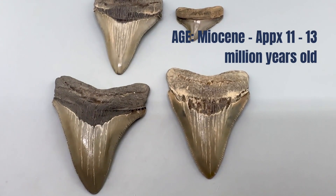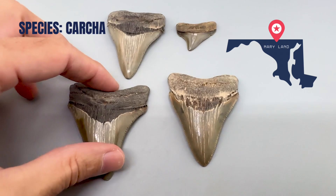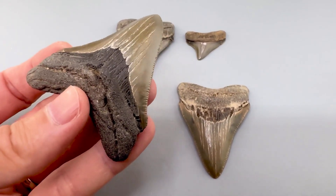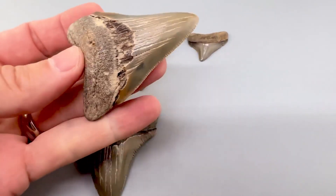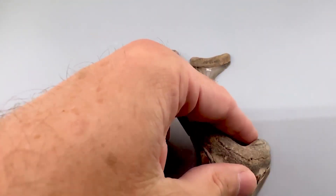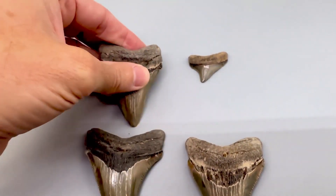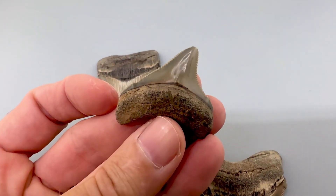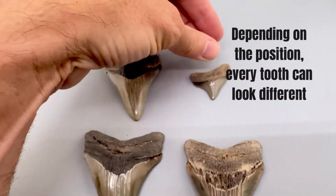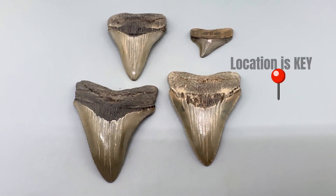This group of Chubutensis is all from the Middle Miocene Calvert Formation in Maryland, roughly 10 to 14 million years old. You can see that some have little hints of cusps, and some have hardly any cusp at all — but this is what it is, it's a Chubutensis tooth. You could have cusps, or you could not have cusps. This little lateral tooth here has really well-defined cusps, but it's from the exact same location. Every tooth position in the Chubutensis could look different. You just have to know where they're from.